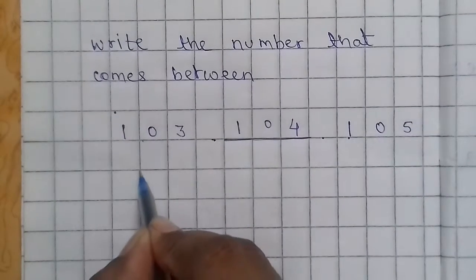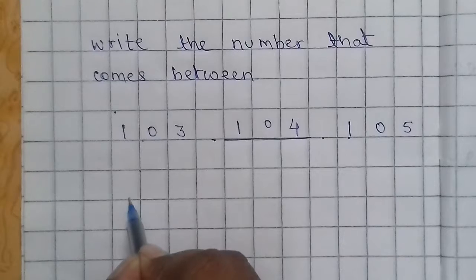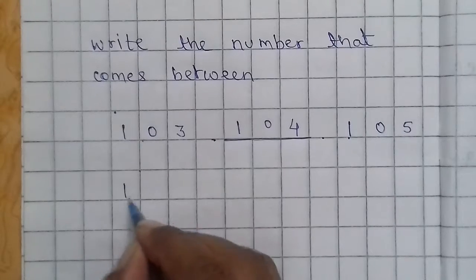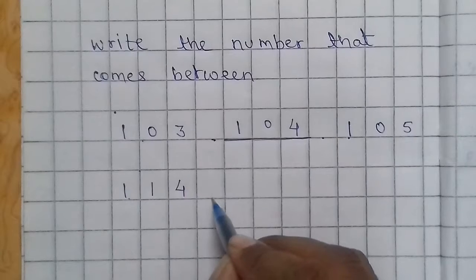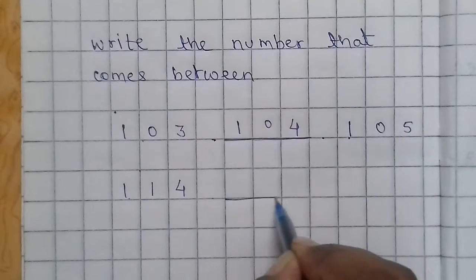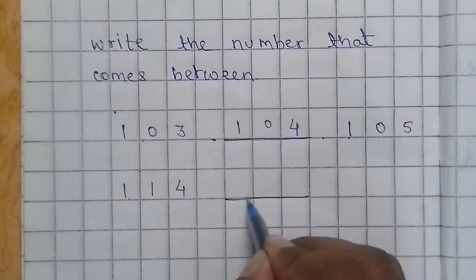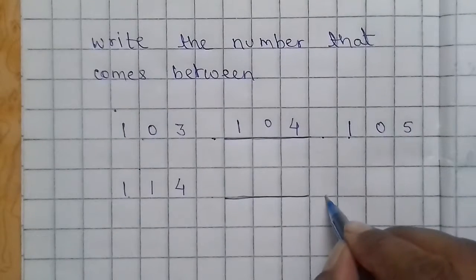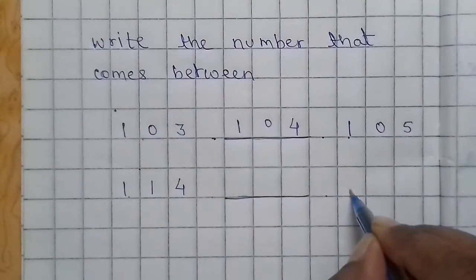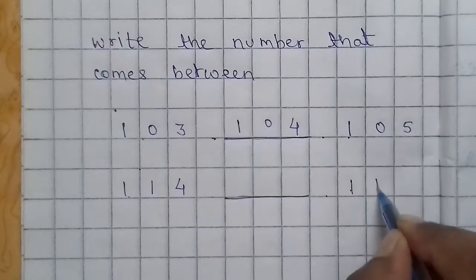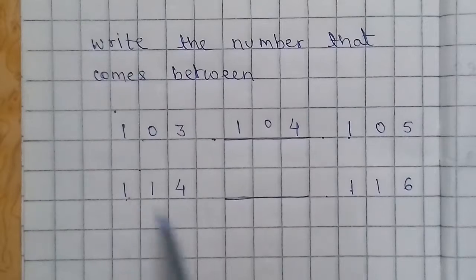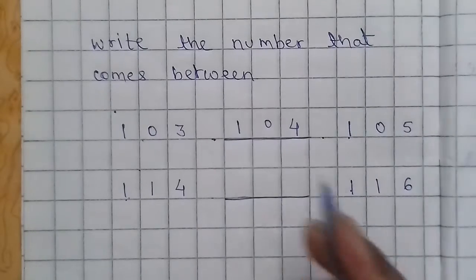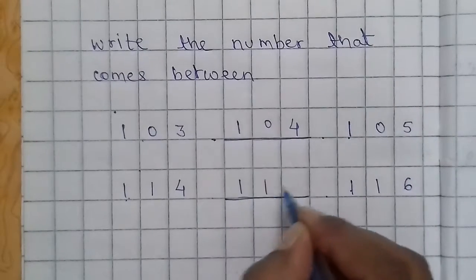After leaving one line, we will write the next example: one hundred, fourteen. Again here we will leave one box, then we will underline three boxes, and after leaving one box we will write the next number: one hundred, sixteen. Which number will come in between one hundred fourteen and one hundred sixteen? Yes, it's one hundred fifteen.